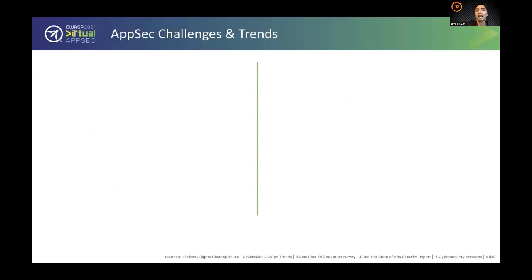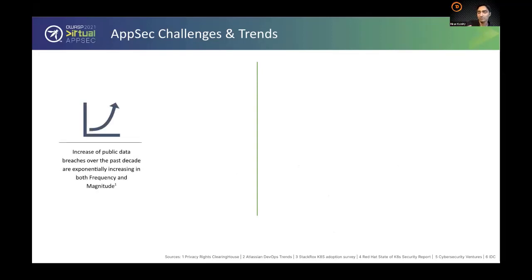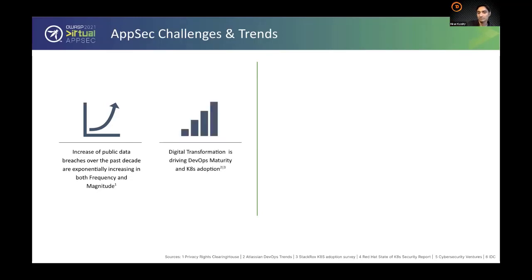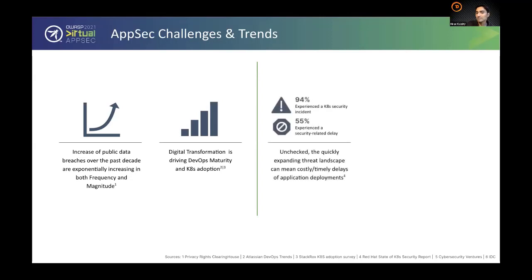Let's talk about the broader AppSec challenges driving change in how application security is done. We're at the intersection of two major trends. First, the number and size of security breaches has increased tremendously over the last couple of years, and that trend is only going one way. Second, digital transformation: every enterprise company is now a software company, and most are embracing cloud-native applications, breaking down monolithic apps into microservices, Kubernetes, serverless, and so on.